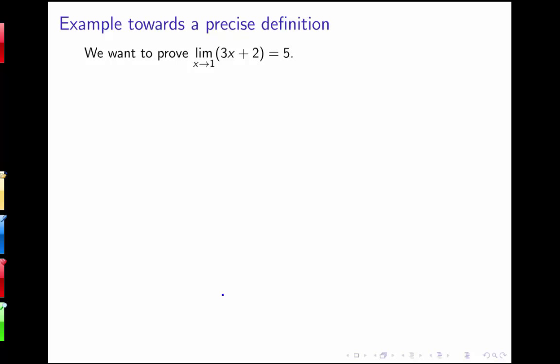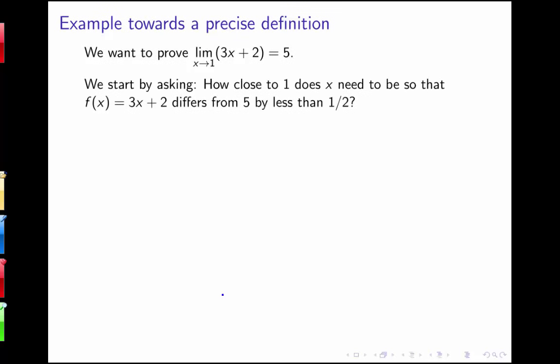One way of thinking about this is by talking about closeness in terms of a particular value — a particular distance that our function 3x plus 2 would be from 5. So we can start by asking: how close to 1 does x need to be so that our function 3x plus 2 differs from 5 by less than 1/2? In other words, we want the distance between f of x and 5 to be smaller than 1/2.